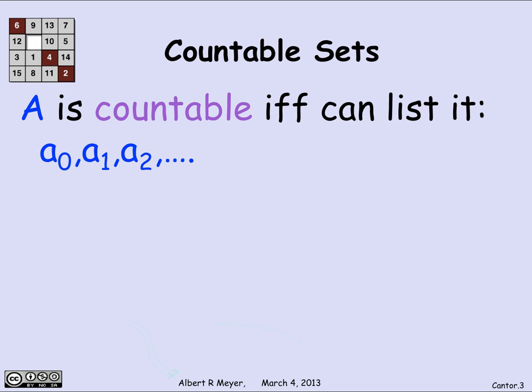The definition of a countable set means you can list it. If A is countable, then you can write a list consisting of a₀, a₁, a₂. You can assign numbers to the elements of A such that every element in capital A shows up in this list at some finite point. There's a little ambiguity about whether you allow the same element to occur more than once, but you could just filter the list for duplicates, and then you have a list in which everything occurs exactly once.